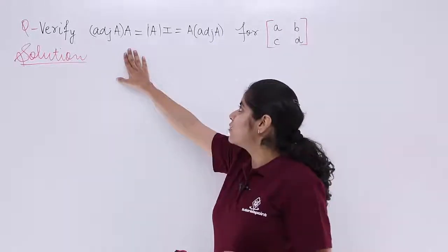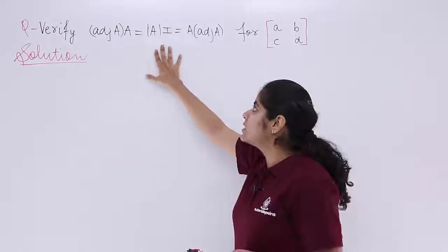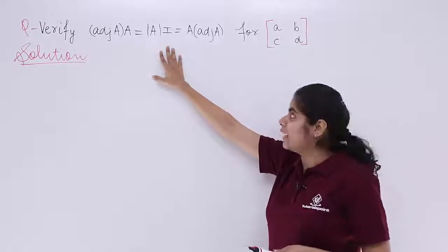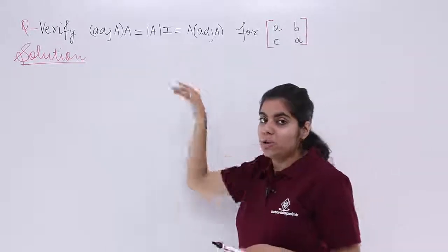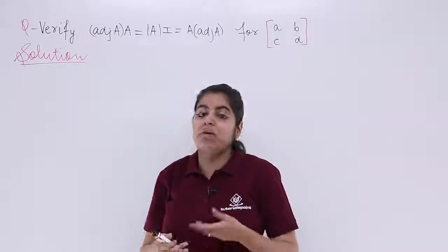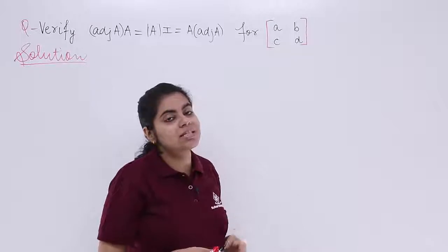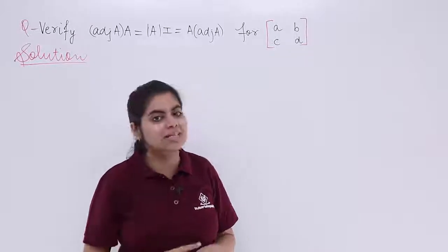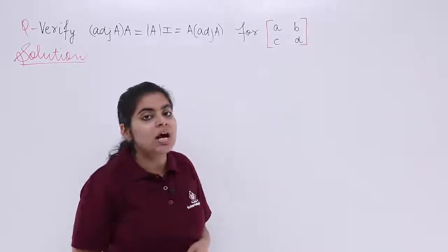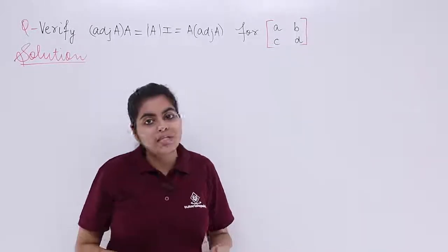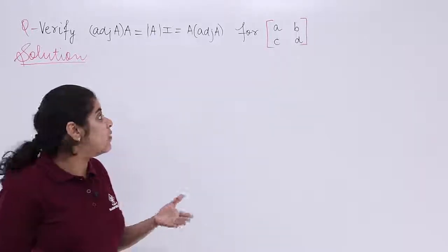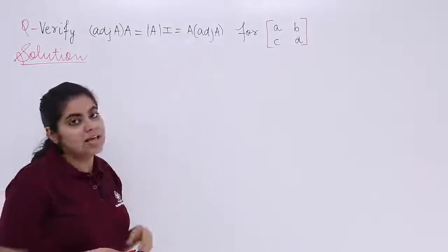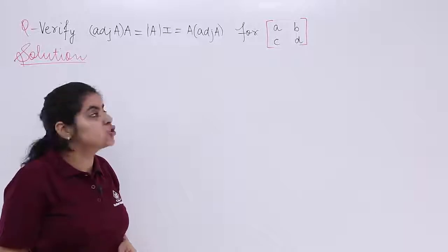The question is: verify adjoint(A) × A = det(A) × I = A × adjoint(A) for the matrix A = [[a, b], [c, d]], which has four elements a, b, c, d. To verify everything, we have to first solve all three parts. Let's get started with the solution.